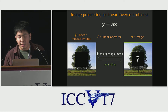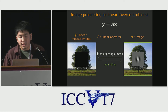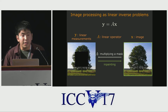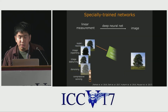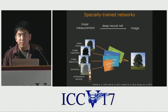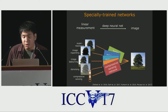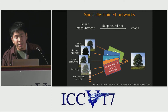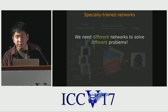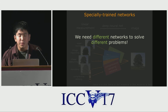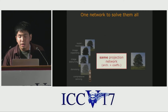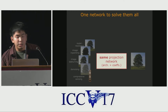Let's use image inpainting as an example. Observe that I can fill any signals into the blank region and form a feasible solution, even if they are not valid natural images. To resolve the underdetermined nature of the problem, state-of-the-art algorithms use specially trained deep neural nets to learn the mapping from the linear measurements Y to the image X. Even though specially trained networks can achieve state-of-the-art results, we need different networks to solve different problems. This is very inefficient, especially when we need to deal with a wide spectrum of image processing problems. In this paper, we propose a framework that can use one network to solve any linear inverse problem.